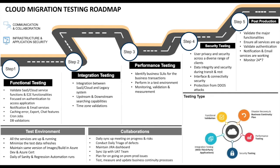As a business continuity process, we need to look for disaster recovery in case the cloud migration is not successful. All in all, the testing types involved are functional validation testing, integration testing, performance testing, security testing, and disaster recovery and business continuity planning — forming the complete cloud migration testing roadmap.